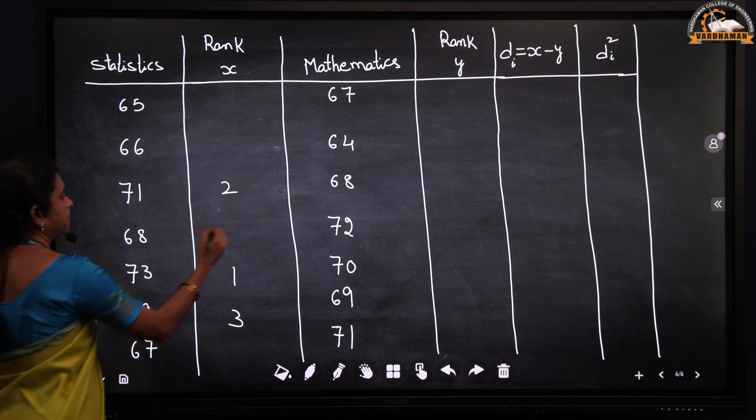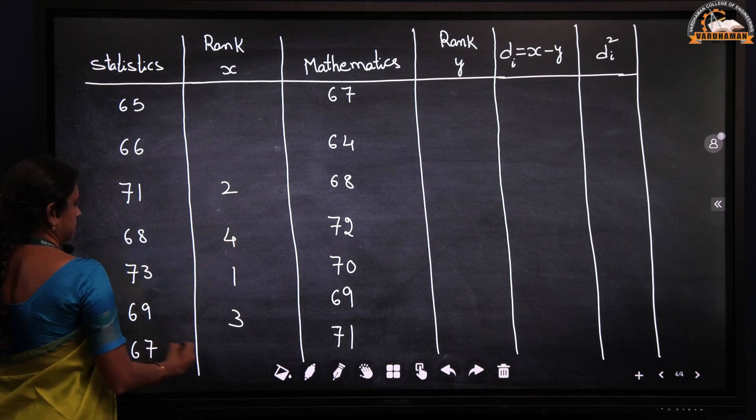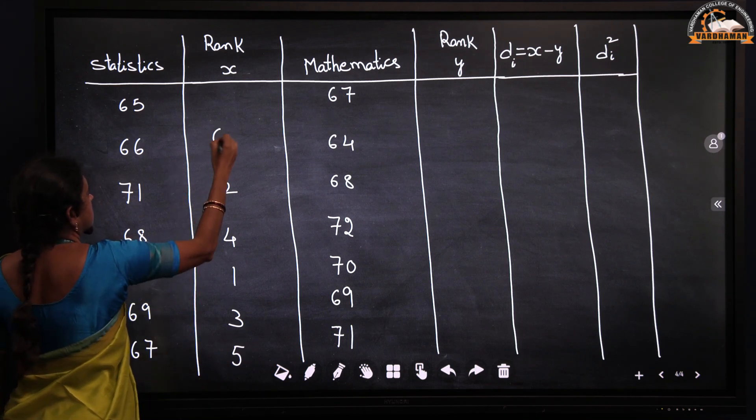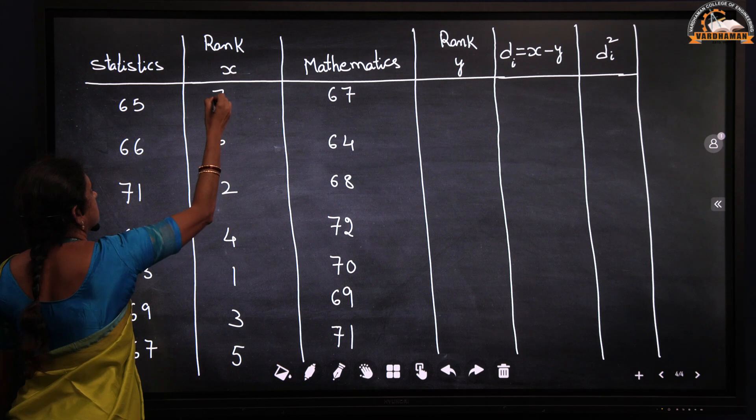Then 68 is 4, 67 is 5, 66 is 6, and 65 is 7.